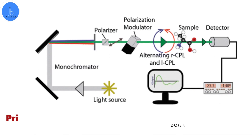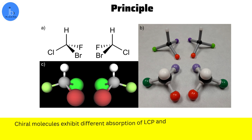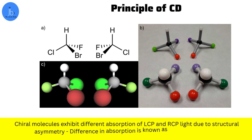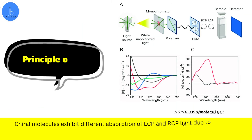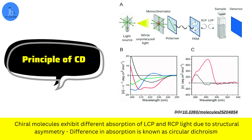Let's try to understand its principle. CD spectroscopy is based on the principle that certain molecules, particularly the chiral molecules — the molecules that are not superimposable on their mirror images — exhibit different absorption of LCP and RCP light due to their structural asymmetry. This difference in the absorption is known as Circular Dichroism.